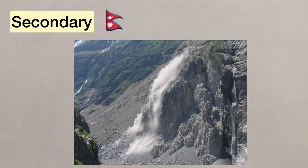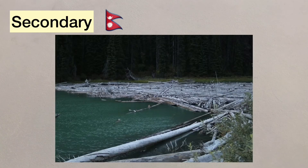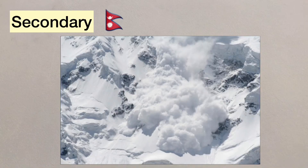Comparing these to the secondary effects in Nepal: landslides and avalanches were triggered, blocking roads and getting in the way of relief efforts. One landslide blocked a river northwest of Kathmandu, meaning many people had to be evacuated in case of flooding. Avalanches on Mount Everest killed 19 people, with another avalanche leaving 250 people missing.